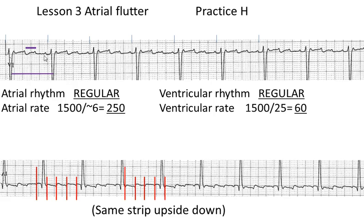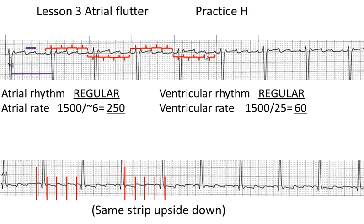Let's take a look at the flutter waves and see if we can figure out that relationship. If I start before the QRS, this is flutter wave number one, number two, number three, number four — so that's four flutter waves per QRS. If we do the next set, we start in the same place: one flutter, two flutters, three flutters, four flutters. Again, starting at the same place: one, two, three, four flutter. Again: one, two, three, four flutter. So this is a stable rhythm throughout of four flutter waves for each QRS.